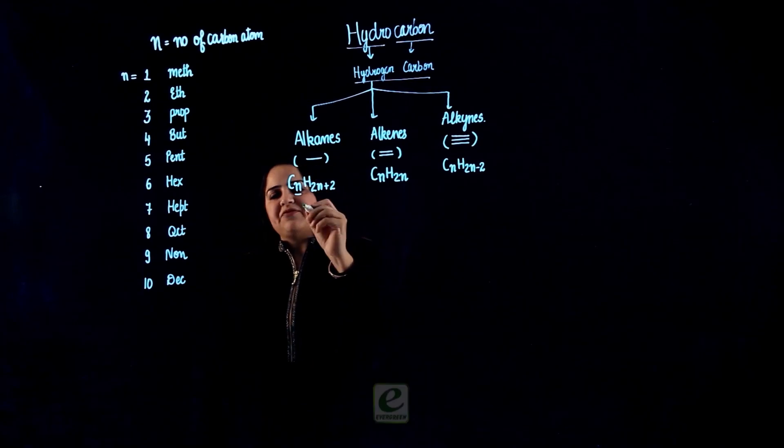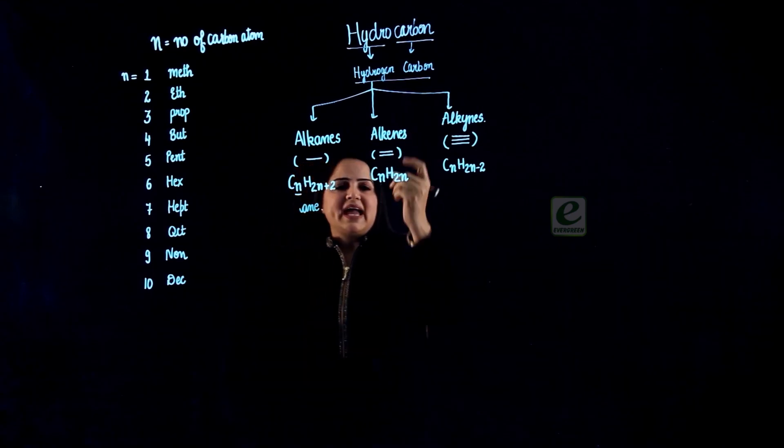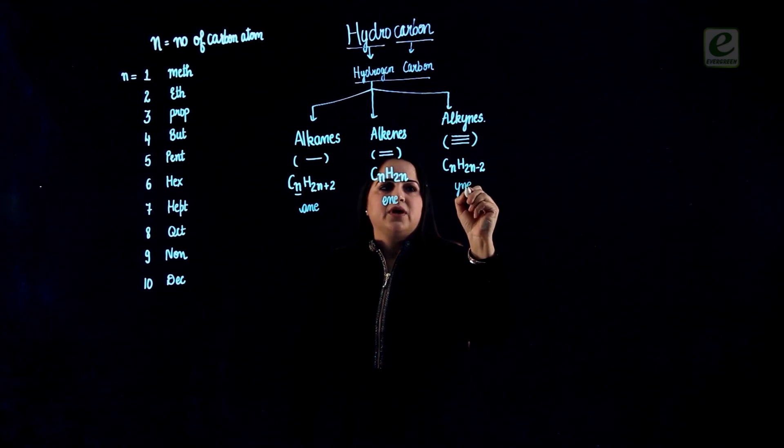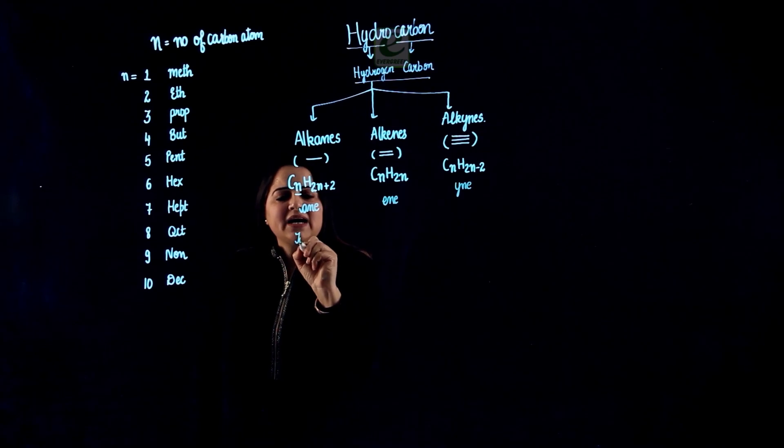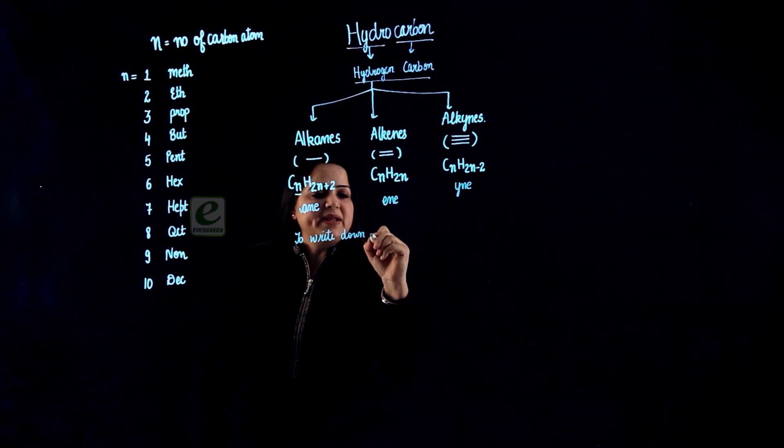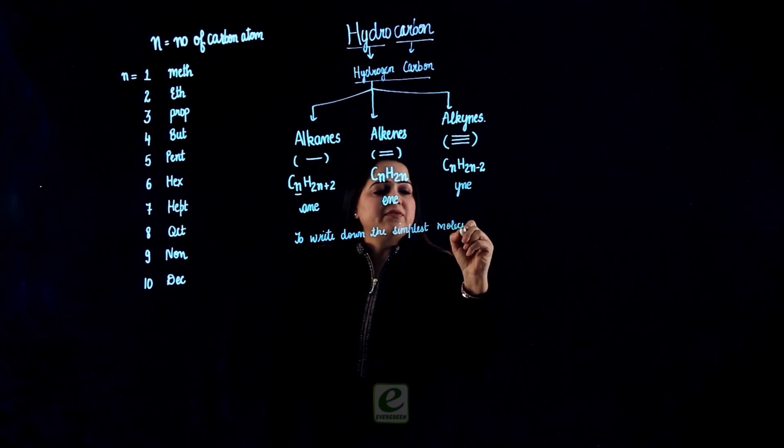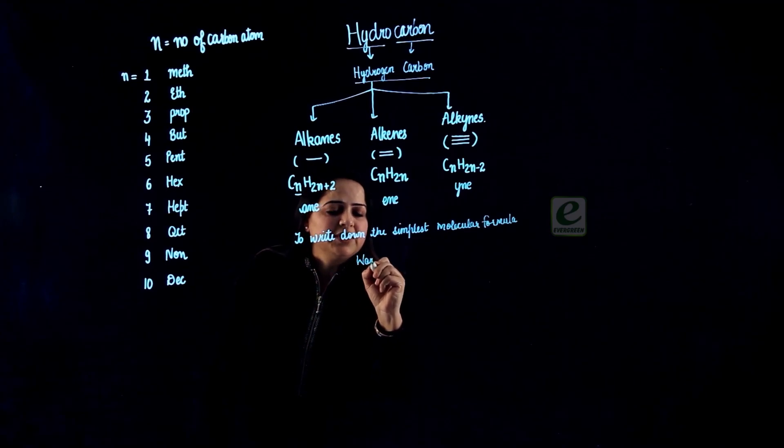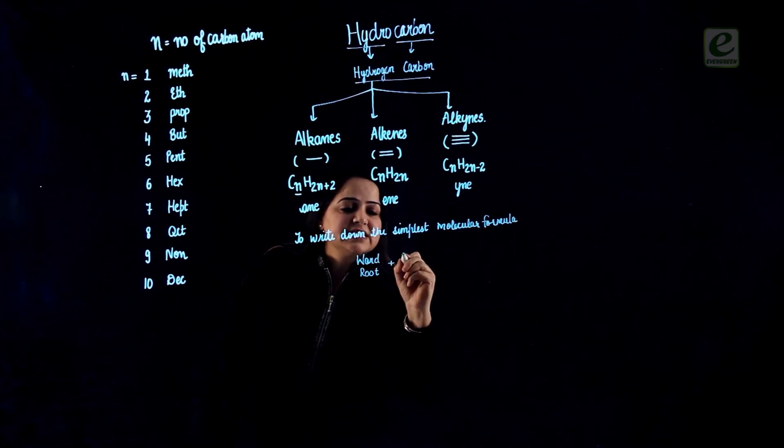Now we talk about the suffix which is used in alkanes. How do we write down the molecular formula of a compound? To write down the simplest molecular formula, we will have two things put together: the first is word root and the second is suffix.